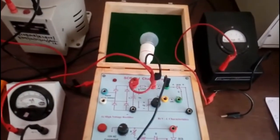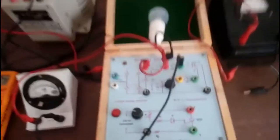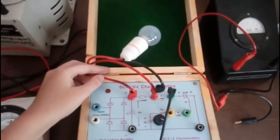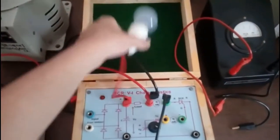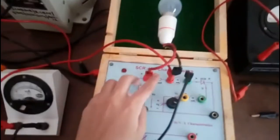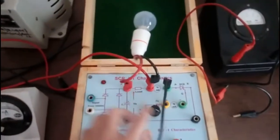Today we are going to study VI characteristics of SCR. This is the kit for the VI characteristics of SCR. I have connected a load over here, that is my lamp load, because it is not internally connected.